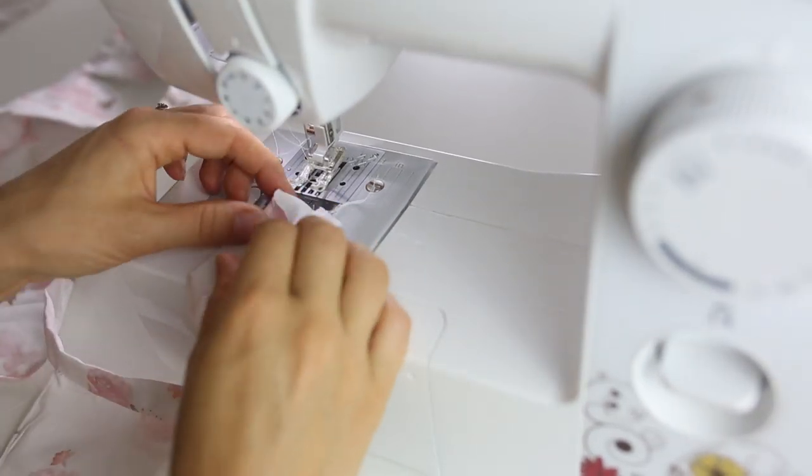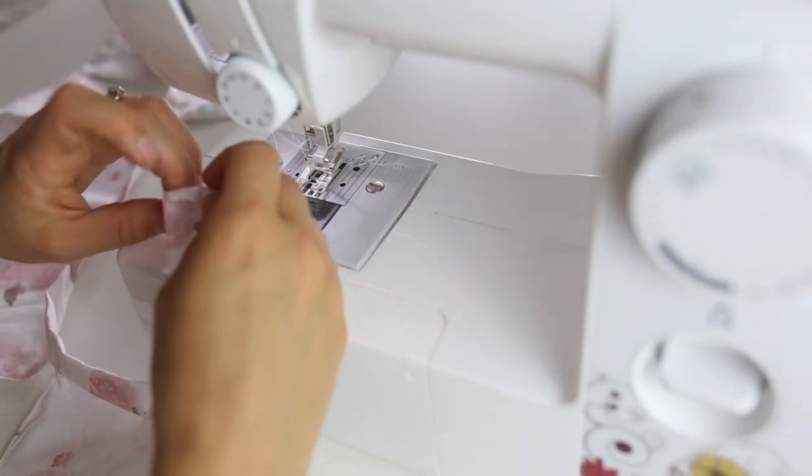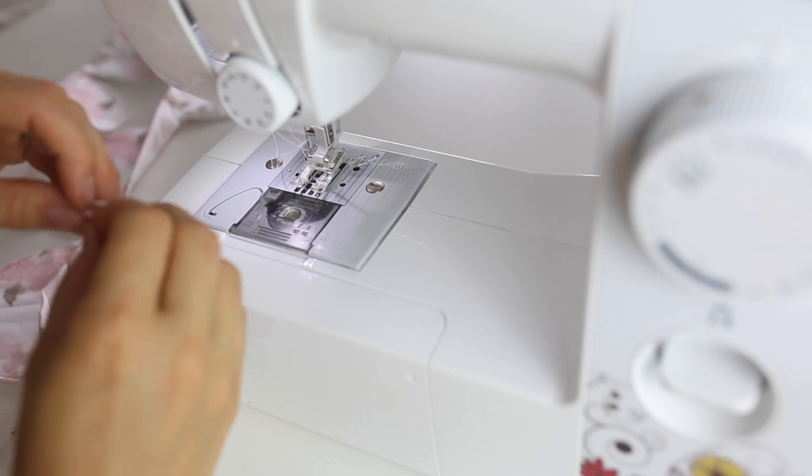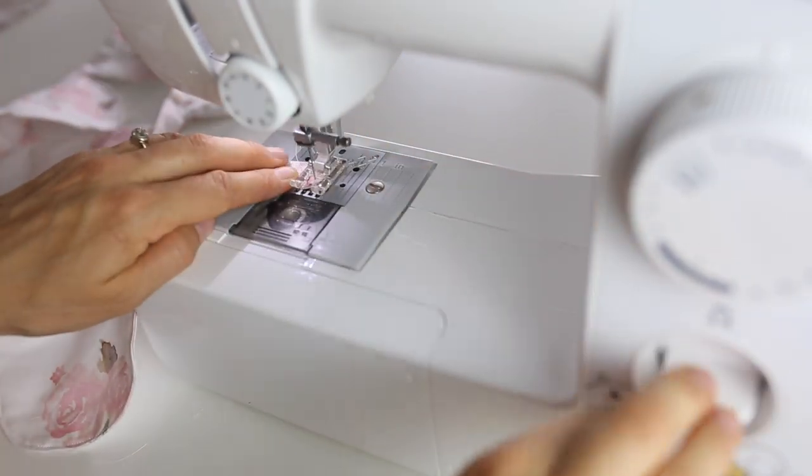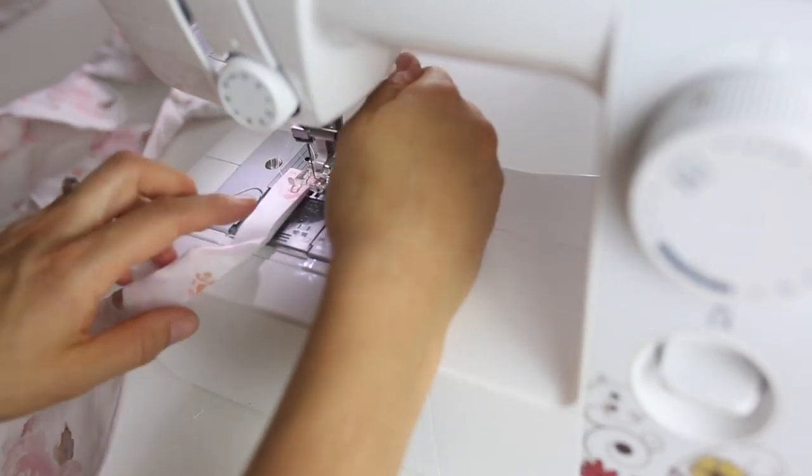When you get your bunting pieces all sewn in, be sure to finish off the ends of the casing by folding them inward and then sewing in place so that the raw edges are hidden inside.